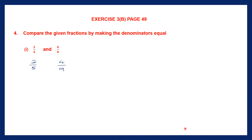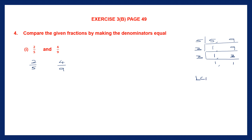Let's find the LCM of the denominators 5 and 9. We divide by 5: 5 ones are 5, then we bring down 9 as it is. Now we use 3: 3 ones and 3 threes are 9. Continue again with 3: 3 ones and 3 ones are 3. The LCM will be 5 into 3 into 3, which is 5 into 9.